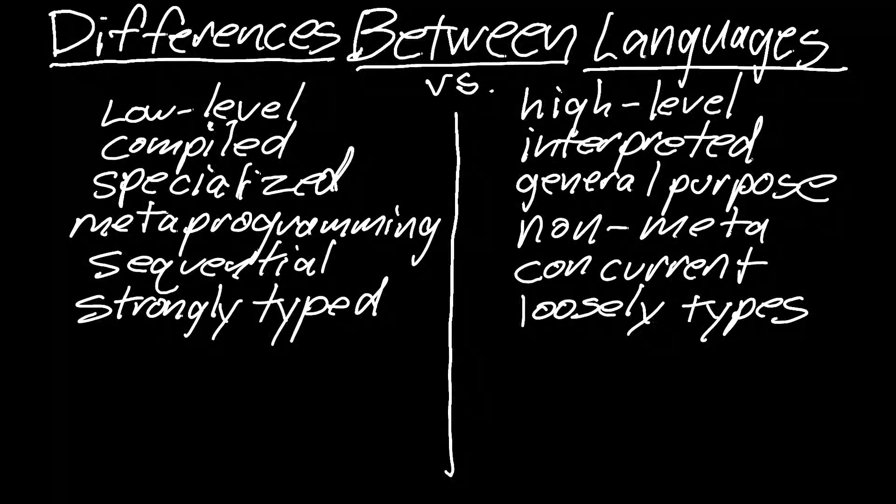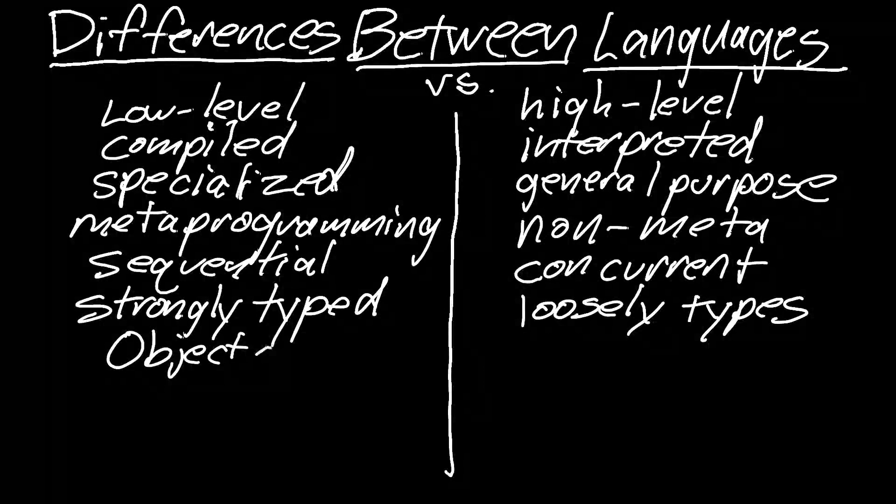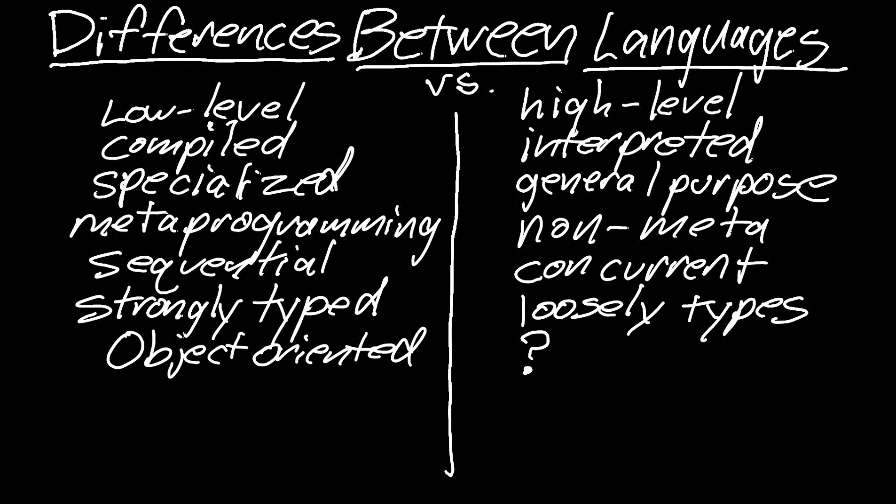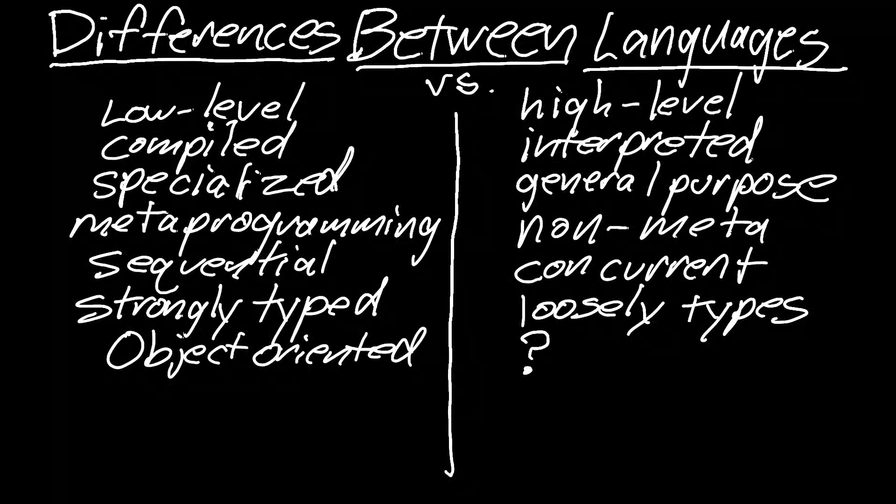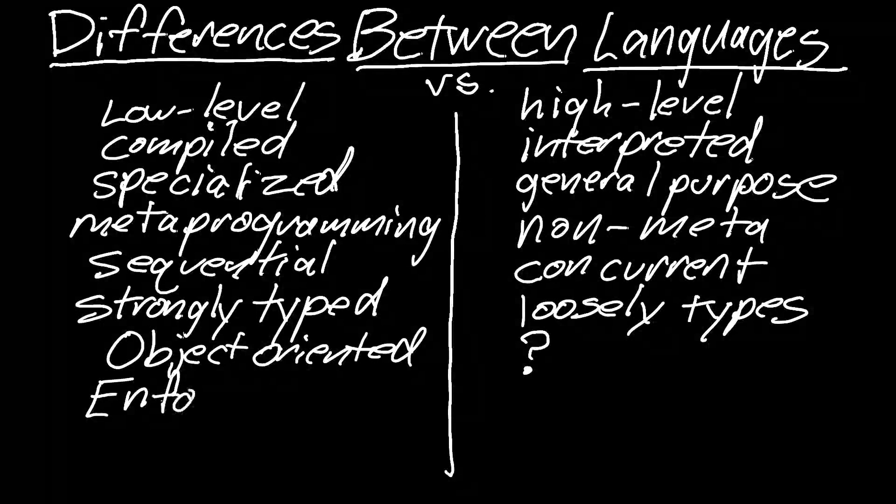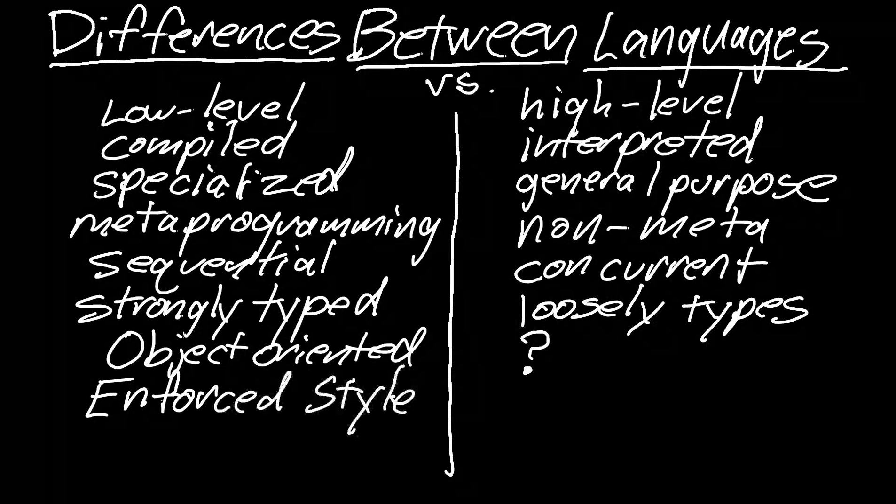And then the final thing, most people would say, what about object oriented? Object oriented versus everything else? Well, the problem is, what is that everything else? It's a whole bunch of stuff. There's procedural, imperative, functional. So it's not really object oriented we're talking about. It's enforced programming style versus non-enforced programming style.